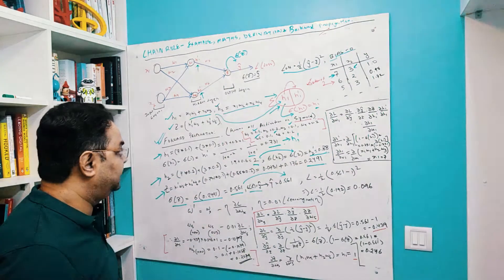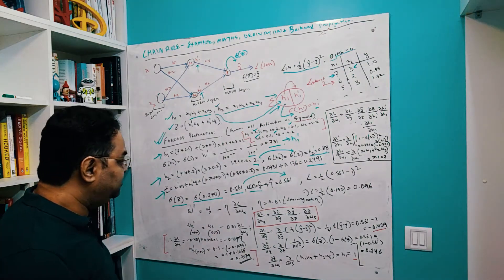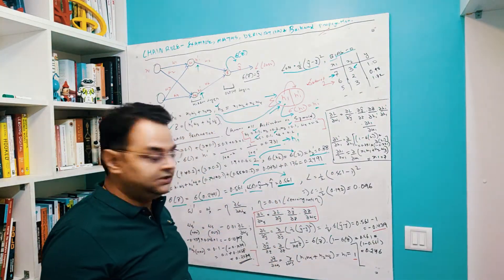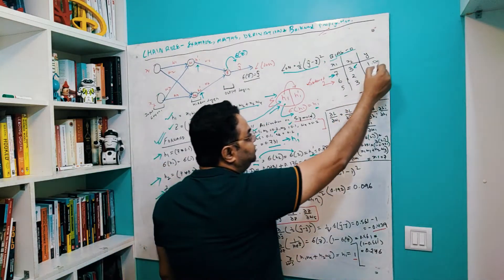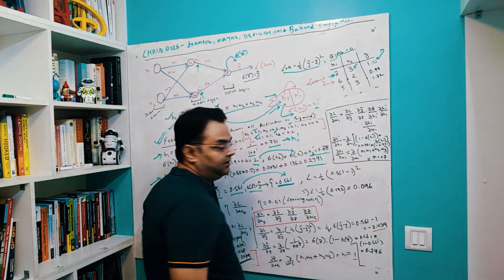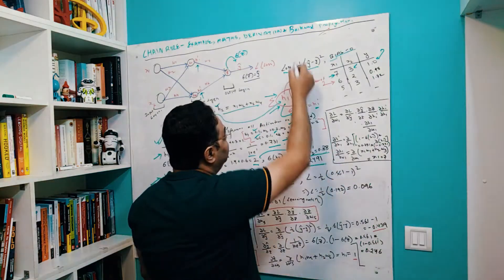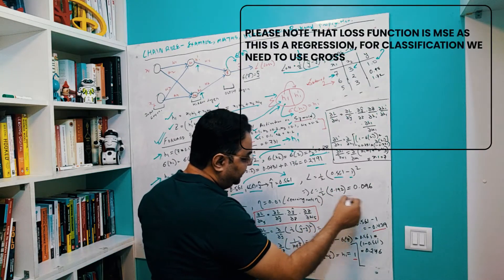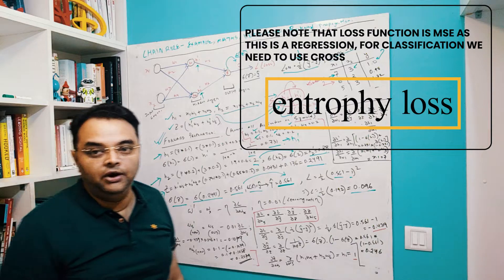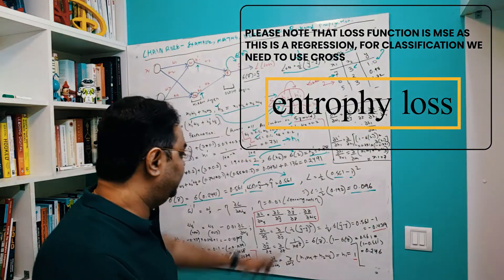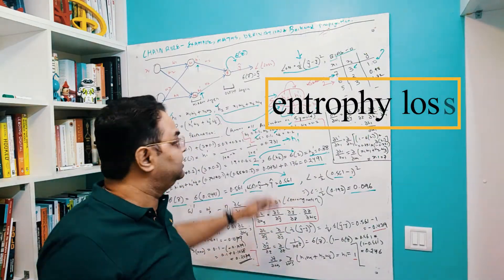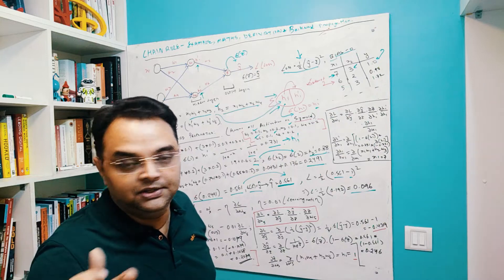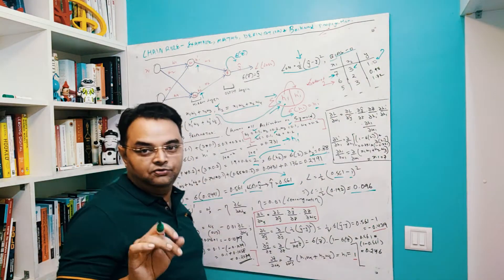My predicted value y-hat is 0.561 and the actual value from the dataset is 1. Putting these into the loss function (1/2)(y-hat − y)² gives a loss of approximately 0.096. Since we're doing one row at a time this is called the loss function; if done over the entire dataset it would be the cost function.